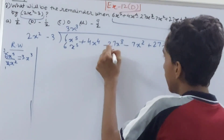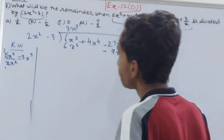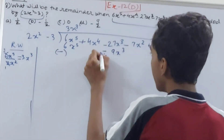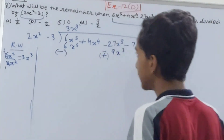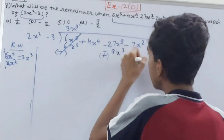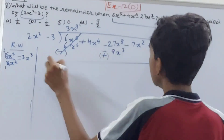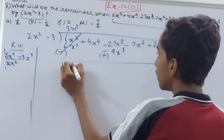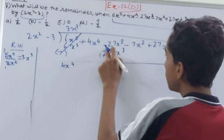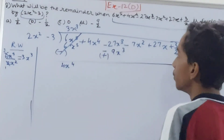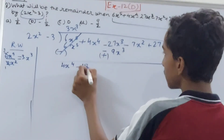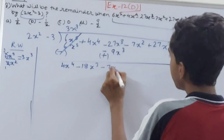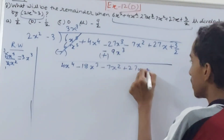Now we subtract — change the signs — so 6x to the power 5 cancels out. What we have left is 4x to the power 4, then minus 27x cubed plus 9x cubed giving minus 18x cubed, and then minus 7x squared plus 27x plus 3/2.